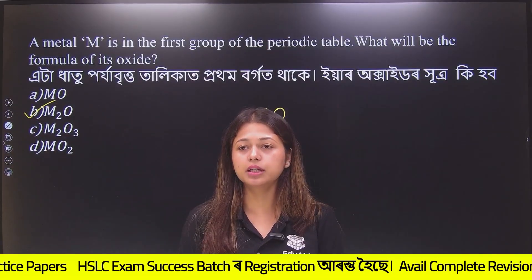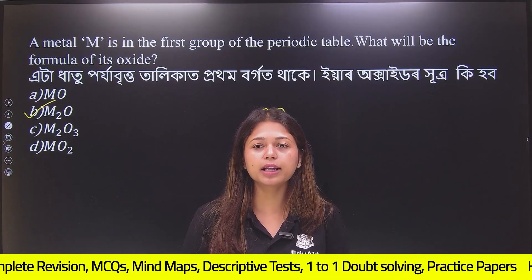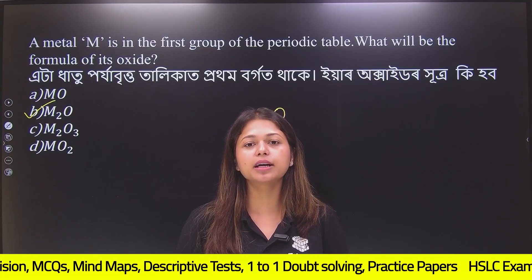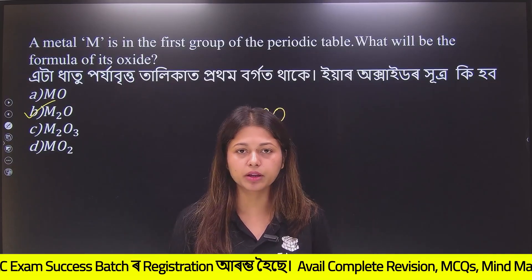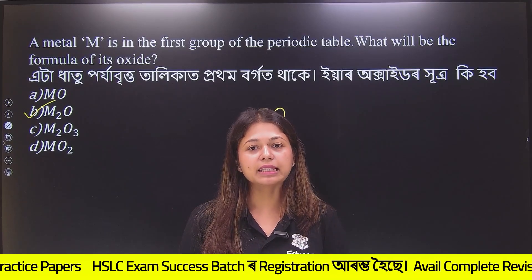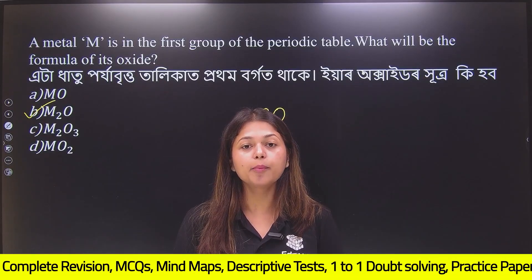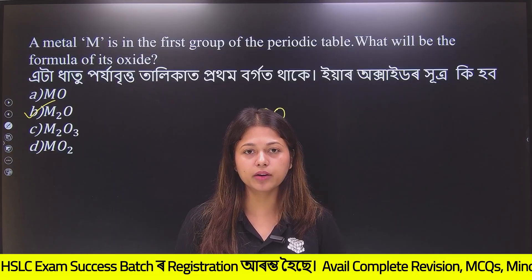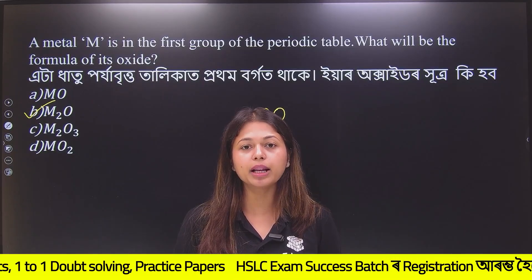We have 3rd group or 4th group formulas too. A lot of students say that Mendeleev's predictable properties are important. Yes, Mendeleev's predictions are important. Oxides are formed. What are hydrides? That's what you want to say — Eka-boron, Eka-silicon — these are important predicted elements.